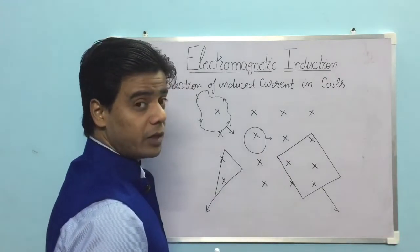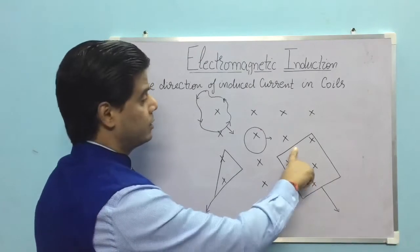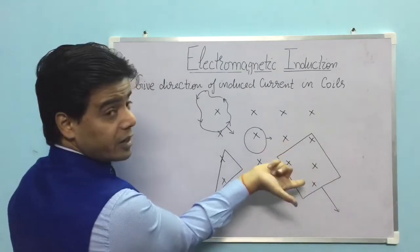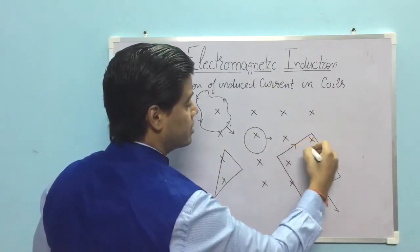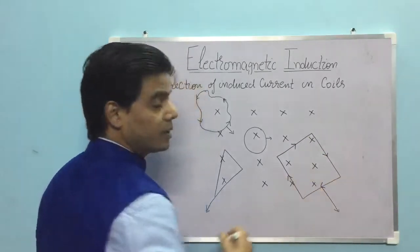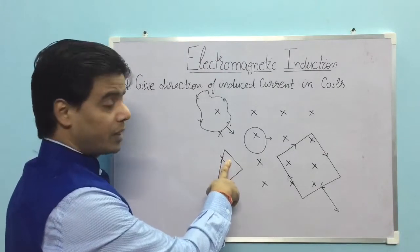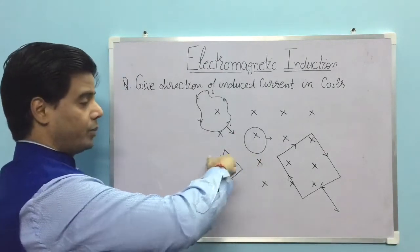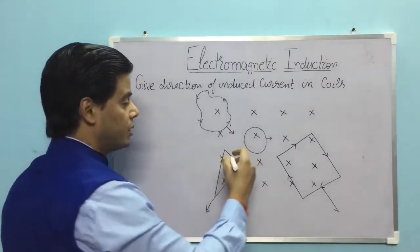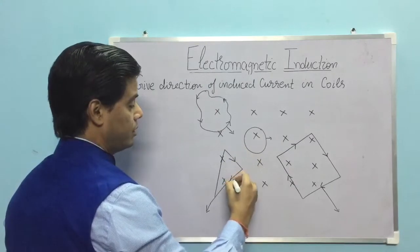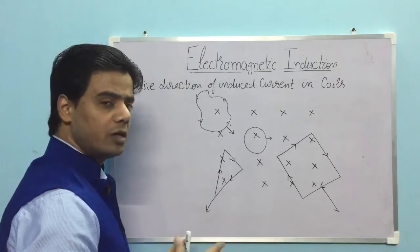For the coil moving out of the field region, apply Fleming's right-hand rule on the part closer to the magnetic field boundary. Magnetic field is inward, force is downward, current flows upward on that side — giving a certain direction. For the triangular coil moving out, applying the rule on the closer side: force is towards the observer, magnetic field is inward, and the current direction is accordingly clockwise.